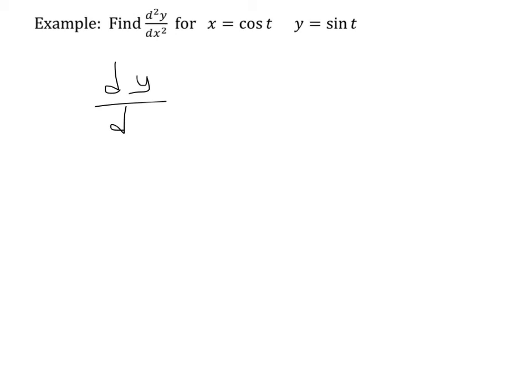So, first of all, what's dy dx? Well, dy dx is dy dt, which is cosine t, over dx dt, which is negative sine t. So, if we wanted, we could simplify this into negative cotangent t.